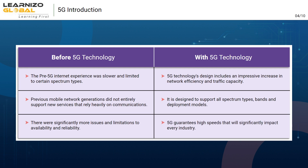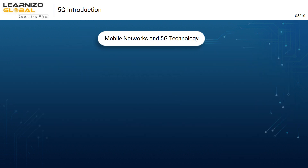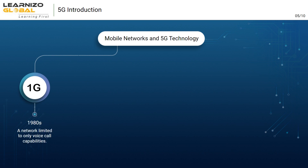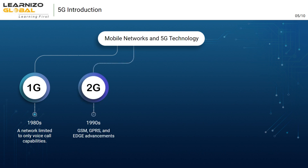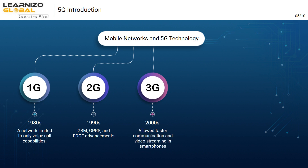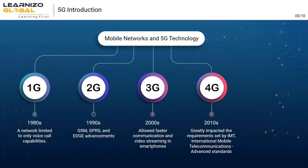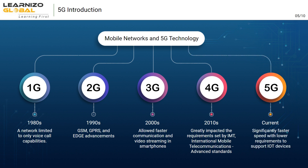Mobile networks and 5G technology: 1G — in the 1980s, a network limited to only voice call capabilities. 2G — in the 1990s, introduced GSM, GPRS, and EDGE advancements. 3G — in the 2000s, allowed faster communication and video streaming on smartphones. 4G — in the 2010s, greatly impacted requirements set by IMT advanced standards. 5G — current scenario, with significantly faster speeds, lower requirements, and support for IoT devices.